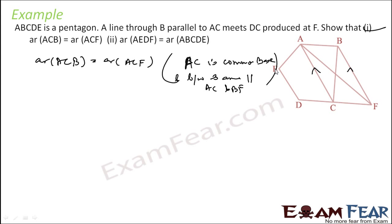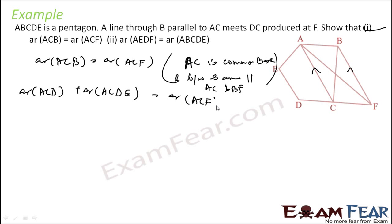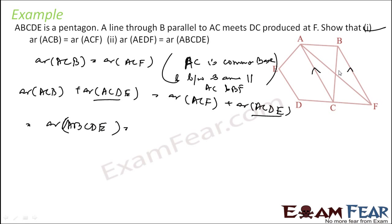Second part: if you do that, area of AED plus area of ACD equals area of ACDE. Similarly area of ACF plus ACD equals ACDE. On the left hand side simply you can write ACD added on both sides. So ABC plus ACD is what — ABCDE. Similarly ACF plus ACD is what — ABCDE. And that is what we had to prove.